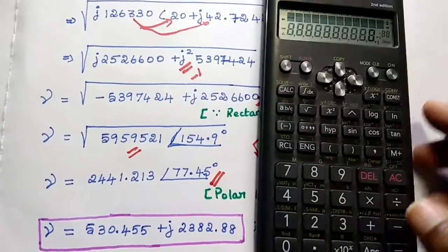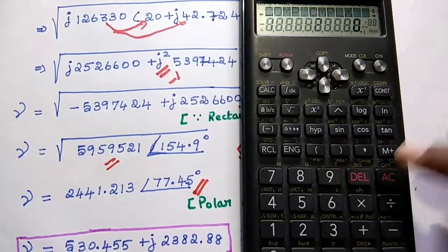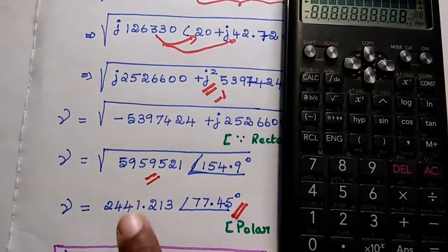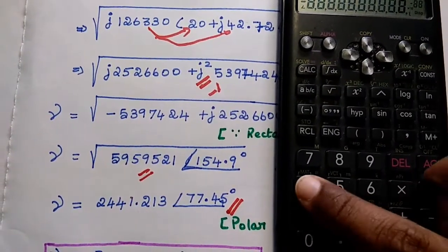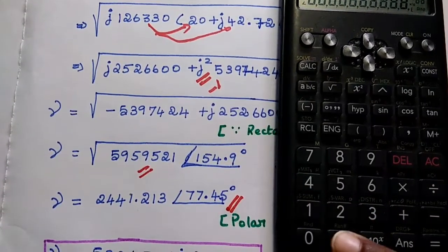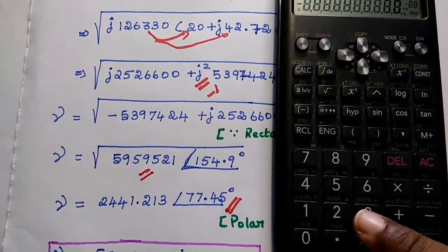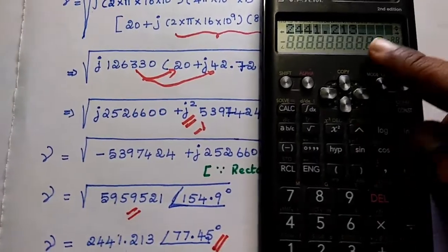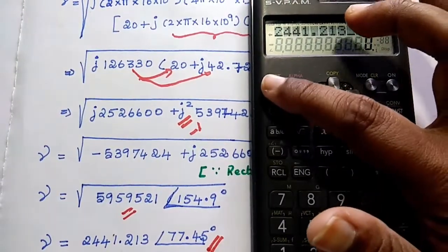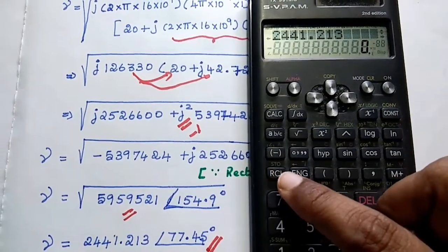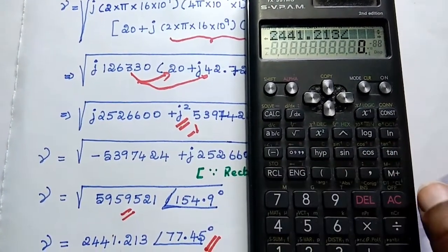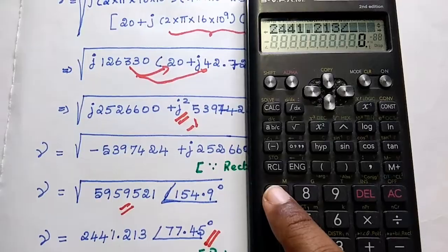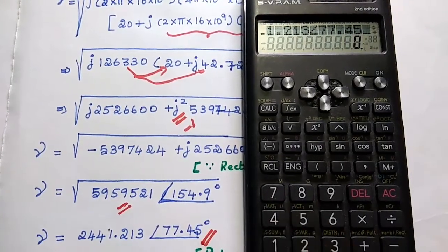To convert polar to rectangular, take the calculator and go to complex mode. Simply type the magnitude, which is 2441.213. For the angle, press shift and then the hyphen key — you can see the angle symbol. Then give the value as 77.45 degrees.